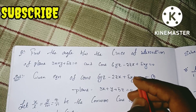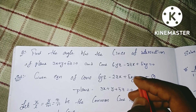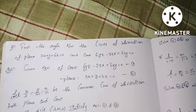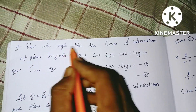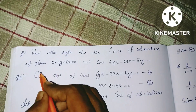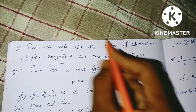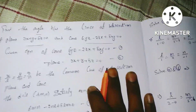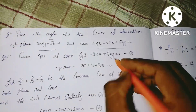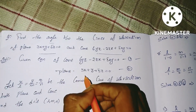In this video, let's take a question about the lines of intersection of a plane and a cone. Let's find the angle between the lines of intersection of the plane. We will see the plane and the cone equation. We will show the given equation of the cone, which is equation 1, and the plane equation, which is equation 2.